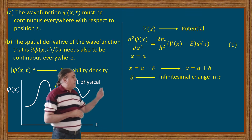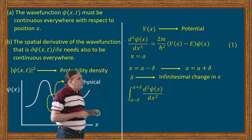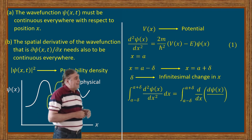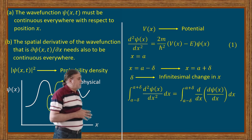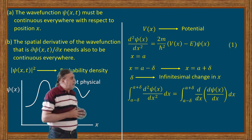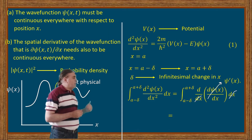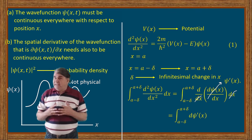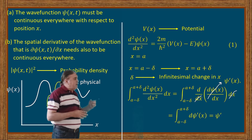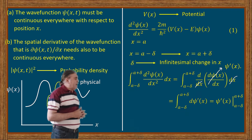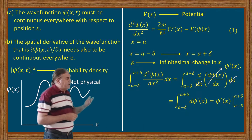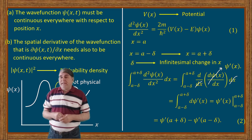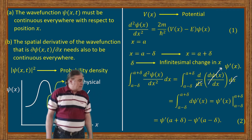The integral from (a − δ) to (a + δ) of d²ψ/dx² dx can be written as the integral of d/dx of (dψ/dx) dx, which I can further write as the integral of d(ψ'(x)). Applying the integration, this gives ψ'(x) evaluated from (a − δ) to (a + δ), which substituting the limits gives ψ'(a + δ) − ψ'(a − δ). I call this equation 2.